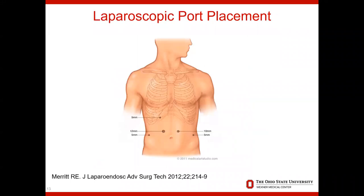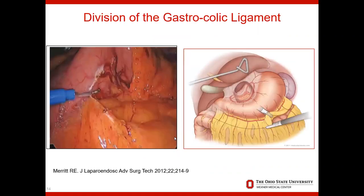The operation is performed in two stages. The first portion is performed through laparoscopic incisions. During the laparoscopic phase, the stomach is completely detached from all intra-abdominal attachments, including the greater omentum, the gastrohepatic ligament, and the short gastric vessels along the greater curvature adjacent to the spleen. The right gastroepiploic artery is preserved to provide blood circulation for the stomach during reconstruction.